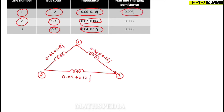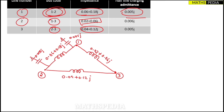We also have half-line charging admittance to add. Between nodes one and two, half-line charging admittance is added at both ends — draw a capacitance to ground. The value is j0.005 at each end. If they give just 'line charging admittance' without saying 'half,' you take half of that value.